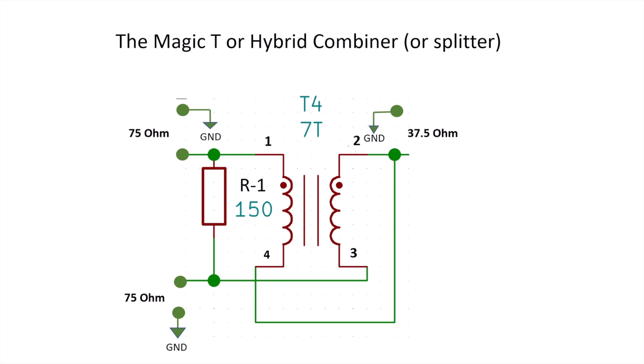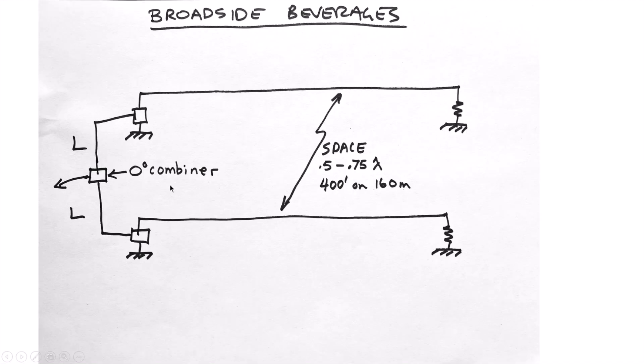Hi, this is Steve V6WZ. I've received a few emails asking about how to build a magic T or zero degree hybrid combiner. In some of my recent videos I've talked about broadside phased beverage pairs as well as end echelon staggered pairs, and in these we usually use a magic T to combine the two antennas.